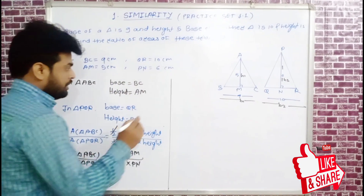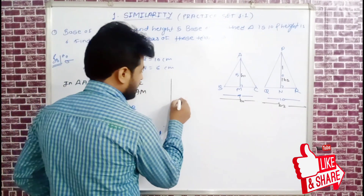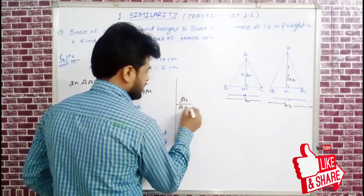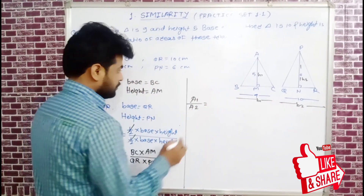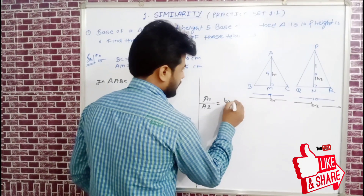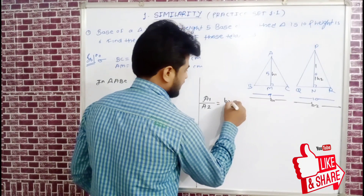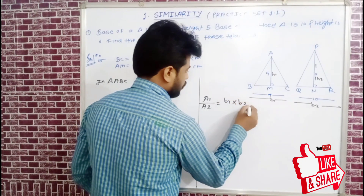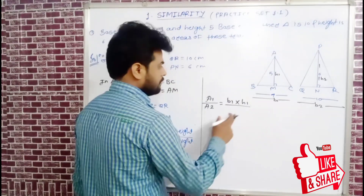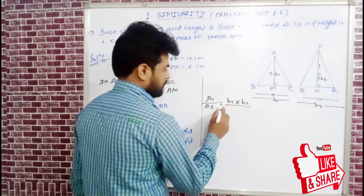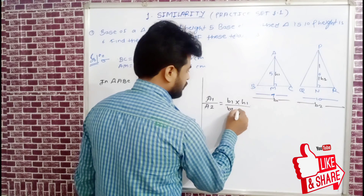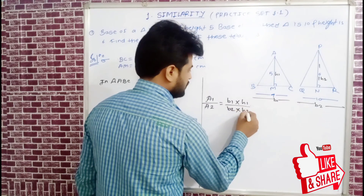First triangle area is A1 and second triangle area is A2. The ratio A1/A2 = (B1 × H1) / (B2 × H2). Here B1 is the base and H1 is the height of the first triangle; B2 and H2 for the second.